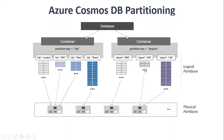Once the data is logically partitioned, the Cosmos DB engine decides where these logical partitions will be mapped to the physical partition. Basically, you can think of it as internally, one or more logical partitions are mapped to a single physical partition. So here you can see London, New York, Paris — they are partitioned here, and the same room is partitioned to this. This is done by the Azure Cosmos DB engine, and we have no control over it.